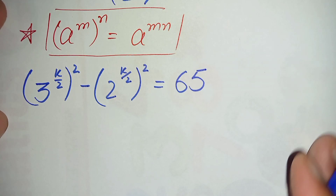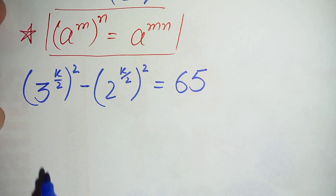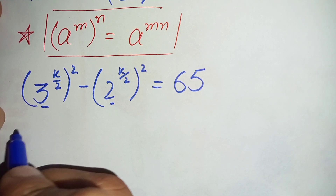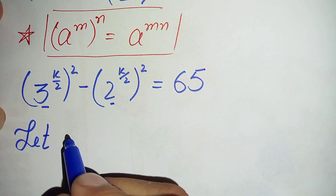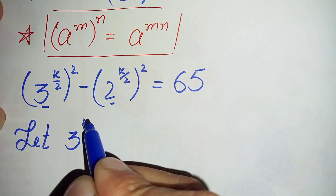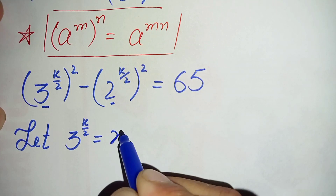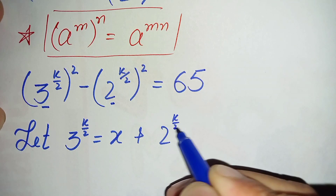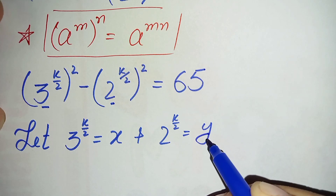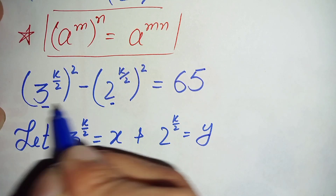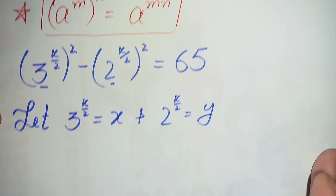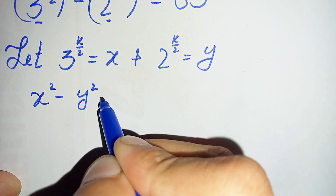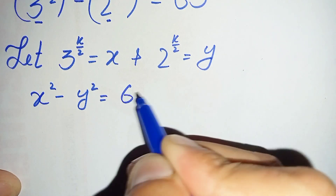Now we will make a substitution. Let 3 raised to power k by 2 be equal to x, and 2 raised to power k by 2 be equal to y. Replacing these two terms with x and y, this becomes x squared minus y squared is equal to 65.